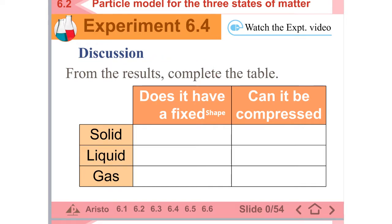Now let's have a discussion and look at this table. For solid, does it have a fixed shape? Yes — you cannot change it easily. Can it be compressed? No, you cannot push it. And then for liquid, does it have a fixed shape? No, because the shape of the liquid actually depends on the shape of the container. Can it be compressed? No, you cannot compress it. For gas, does it have a fixed shape? No — the shape of the gas depends on the shape of the container. Can it be compressed? Yes, we can compress gas by pushing it inward.